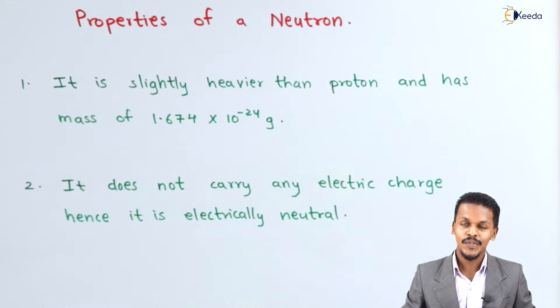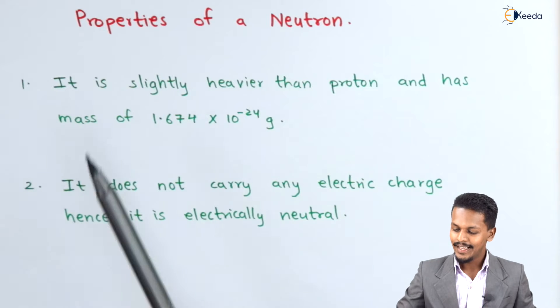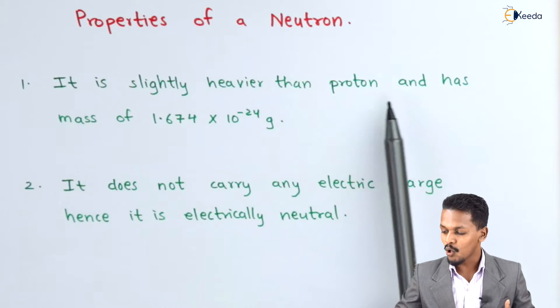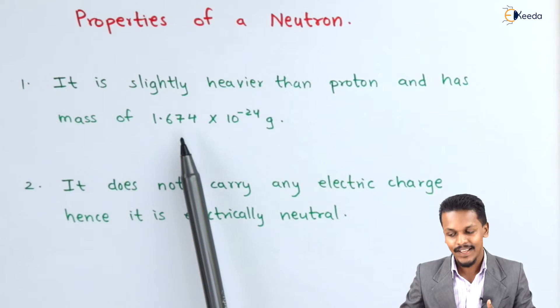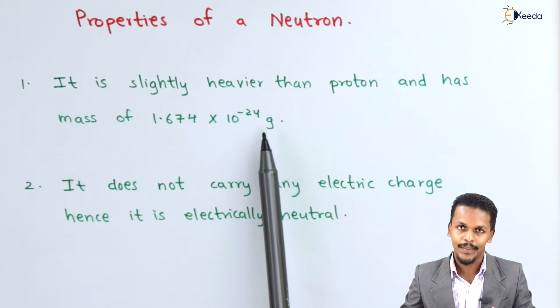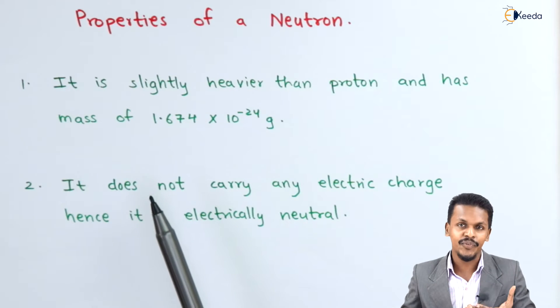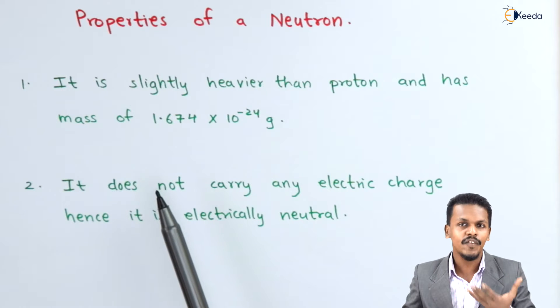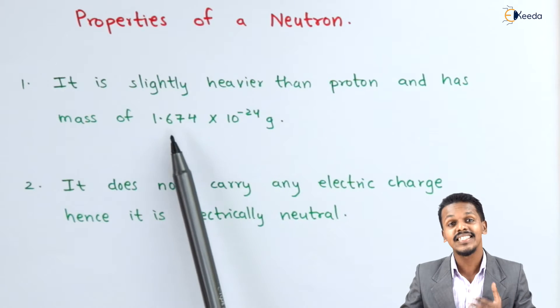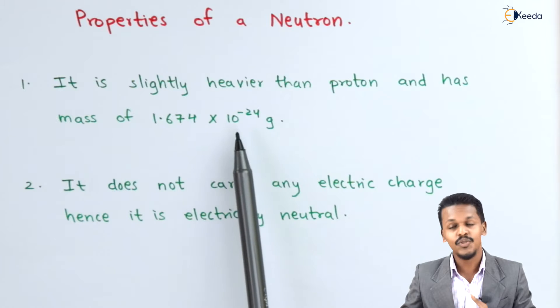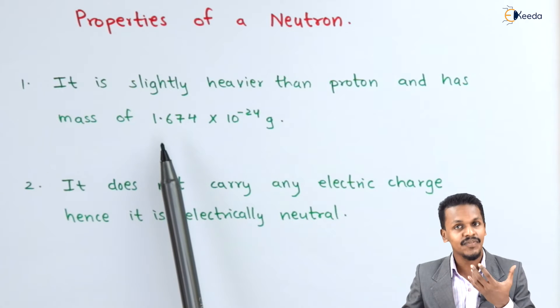Here are the properties of the neutron. First, it is slightly heavier than proton and has a mass of 1.674 × 10⁻²⁴ gram. While comparing the mass of proton and neutron, we know that the mass of proton is 1.672 × 10⁻²⁴ gram.